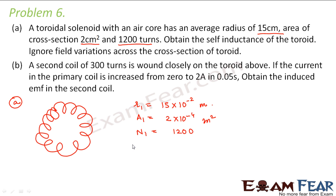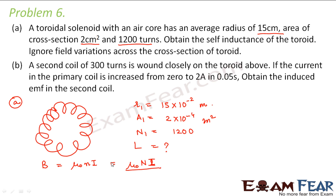We have to calculate the self-inductance of the toroid. Before calculating self-inductance, we should calculate the flux, because once we can express the total flux in terms of magnetic field, we can very easily find the self-inductance. The magnetic field inside the toroid is μ₀nI, where n is the number of turns per unit length, written as NI divided by the length. The length is the circumference of the circle, so it will be 2πr₁.